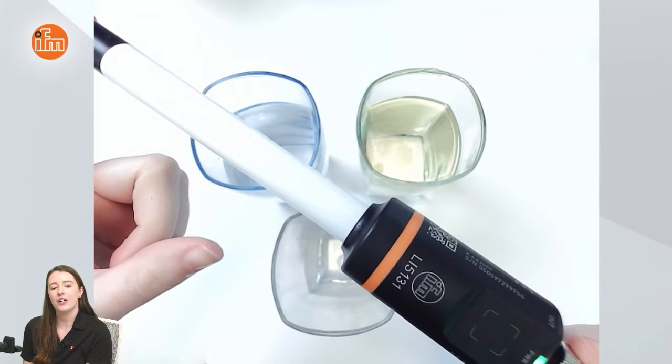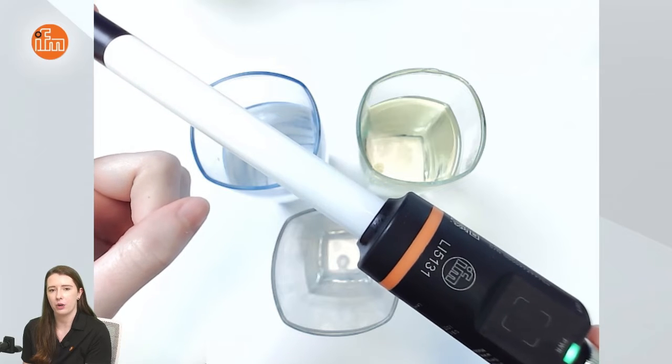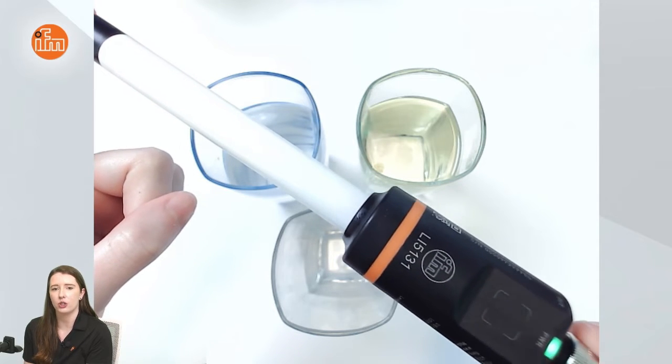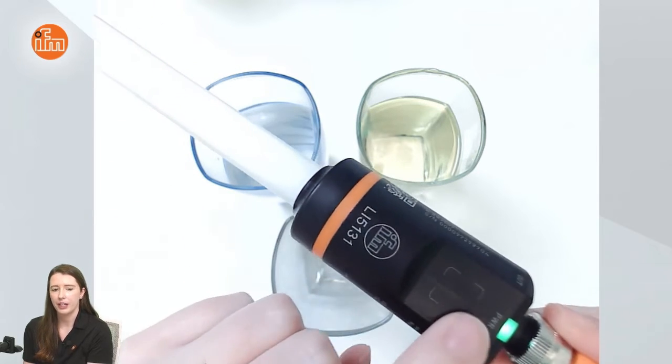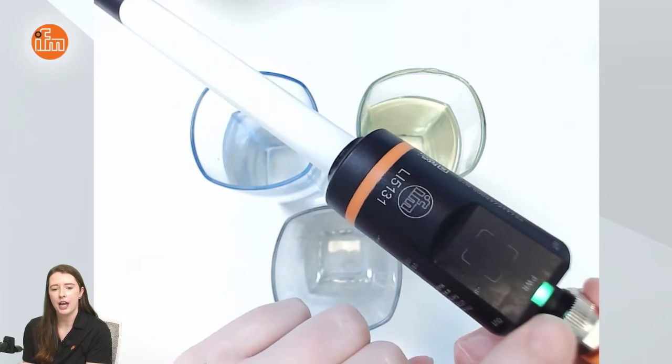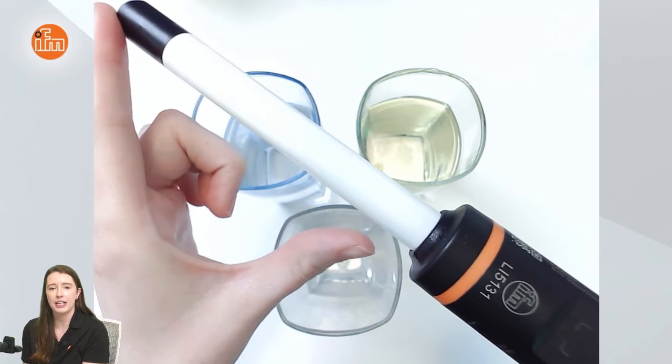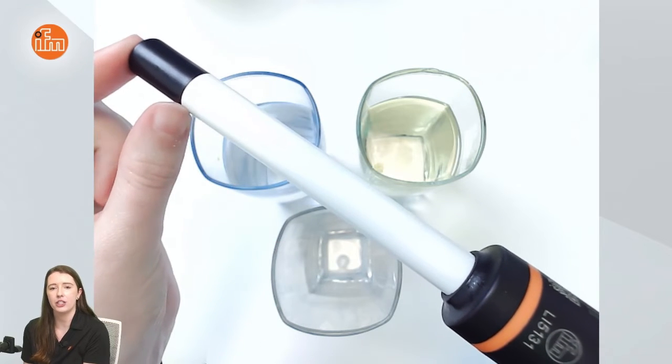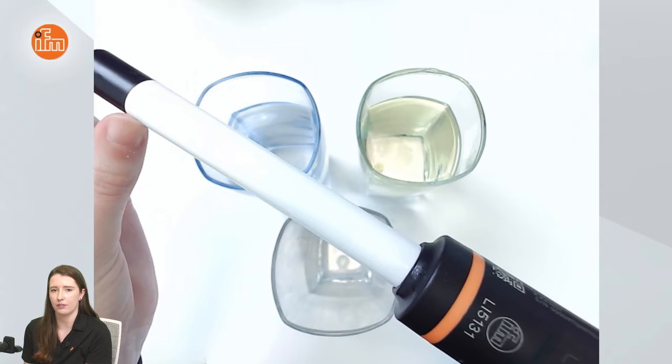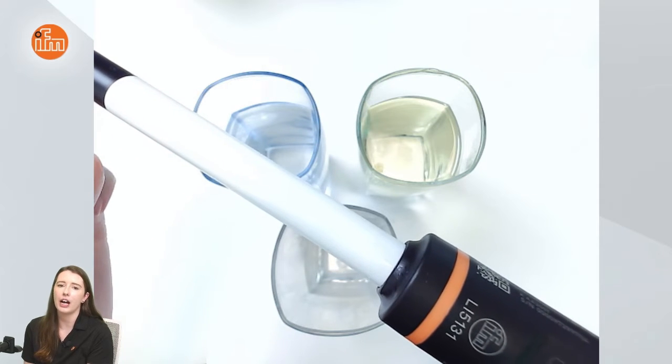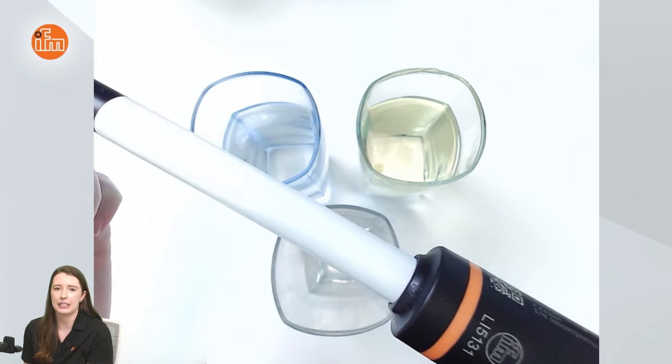So in this video I am going to be using an LI-5131 to show you how to manually adjust it using the inductive teach button. Here we have the inductive teach button as well as the green power LED. This specific part number has 131 millimeter probe length and at the end you can see the 28 millimeter active zone. As always we have other options available with different probe lengths.